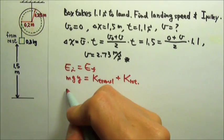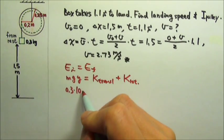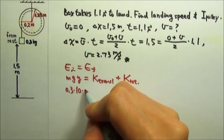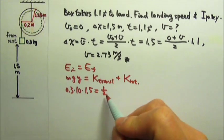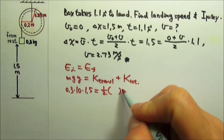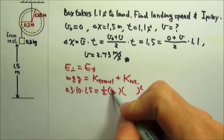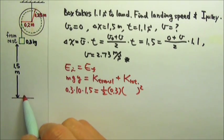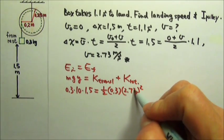Initially, we have 0.3 kilograms. I'm just going to round G to 10, and the height above ground is 1.5. The translational kinetic energy is 0.5 mv squared. The mass that's doing translational motion is 0.3. In the end, the speed of the box is 2.73.